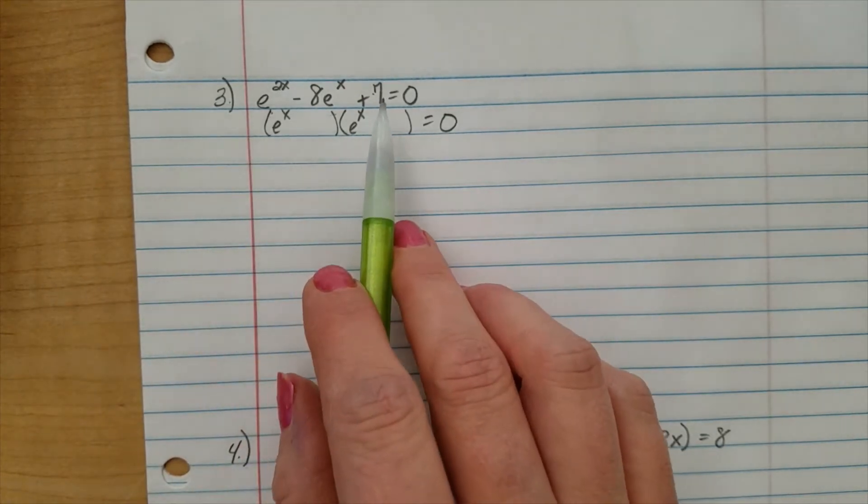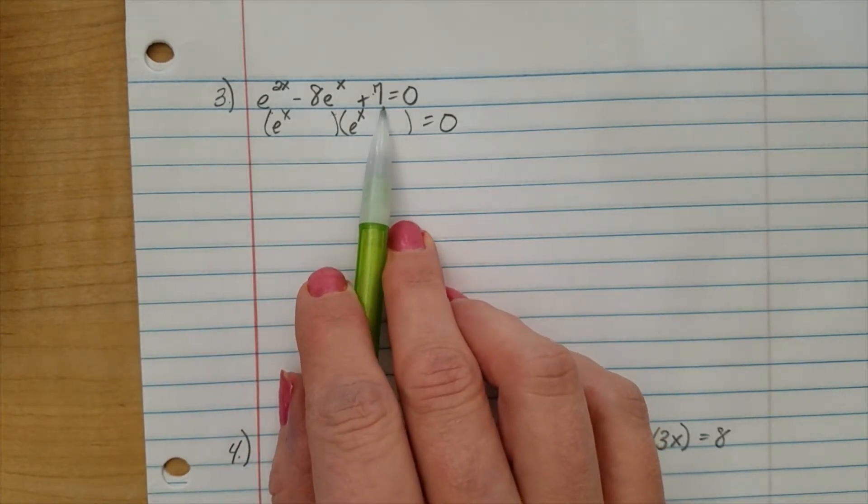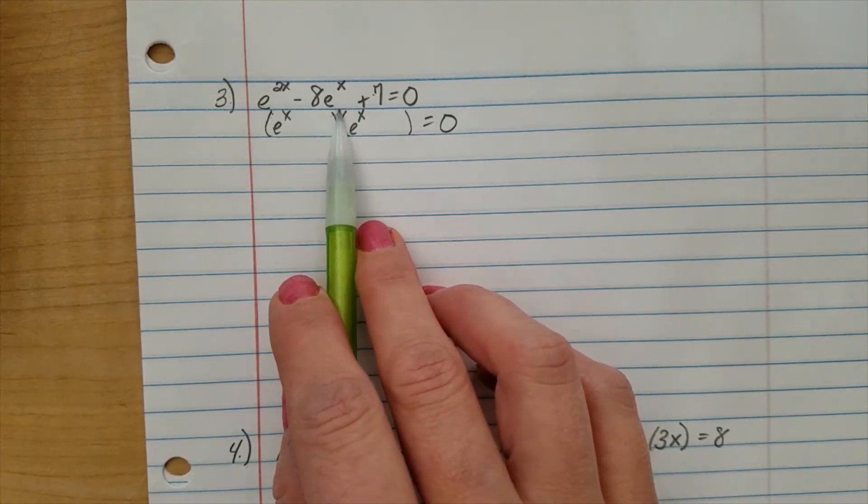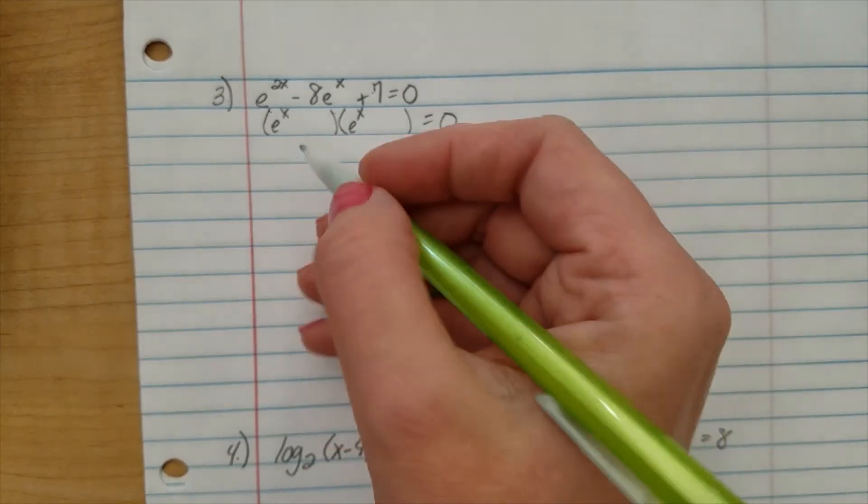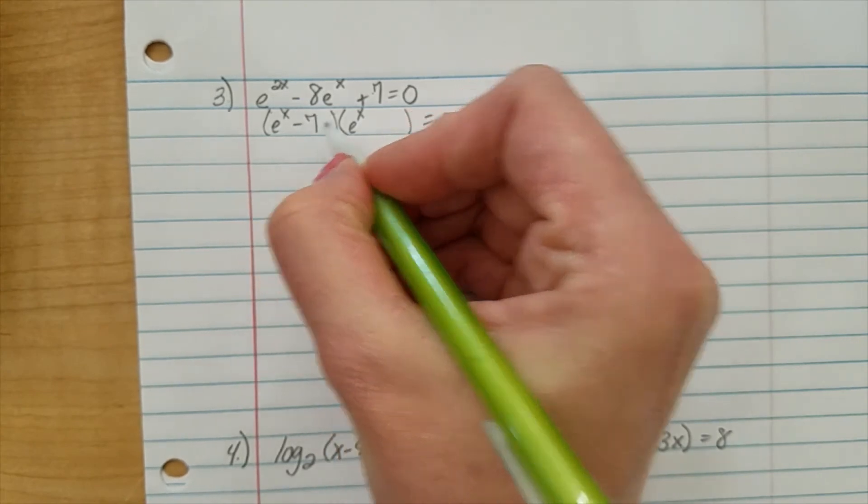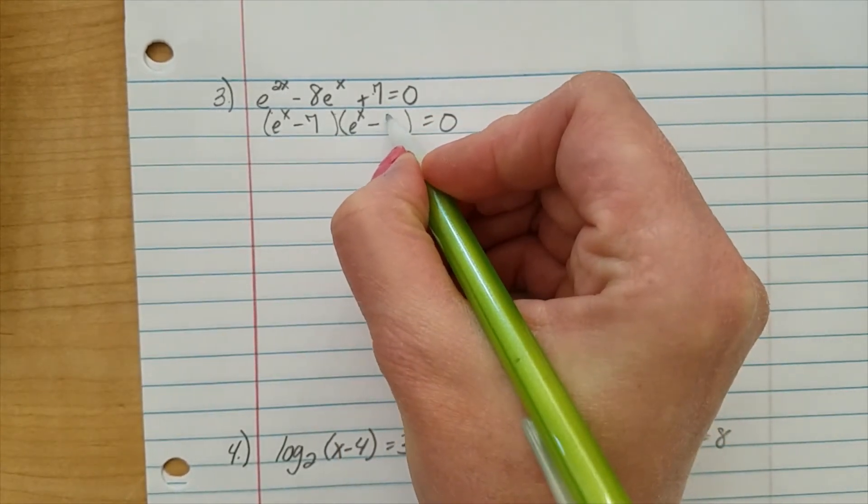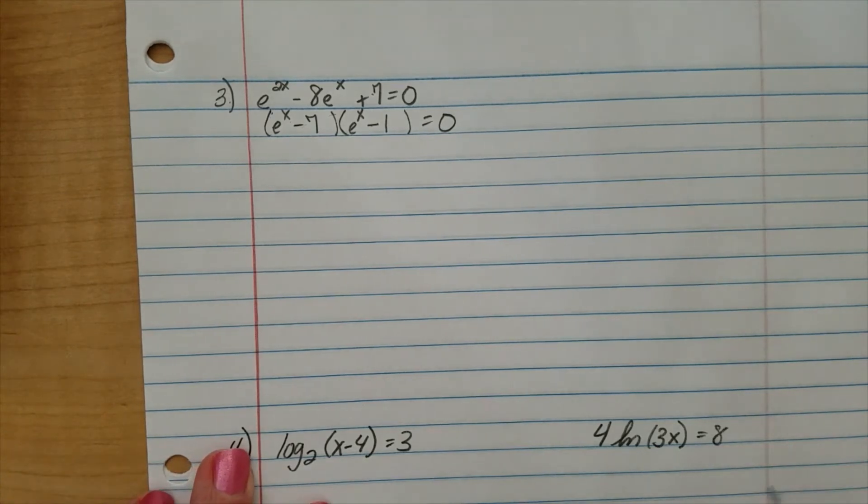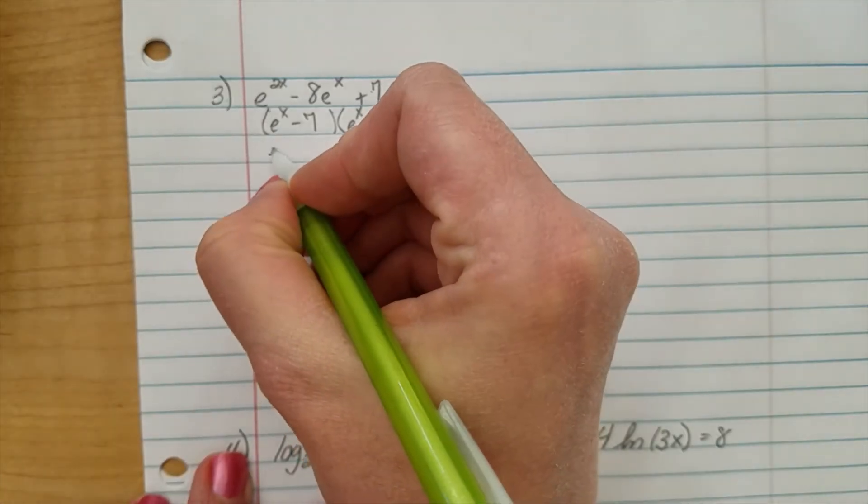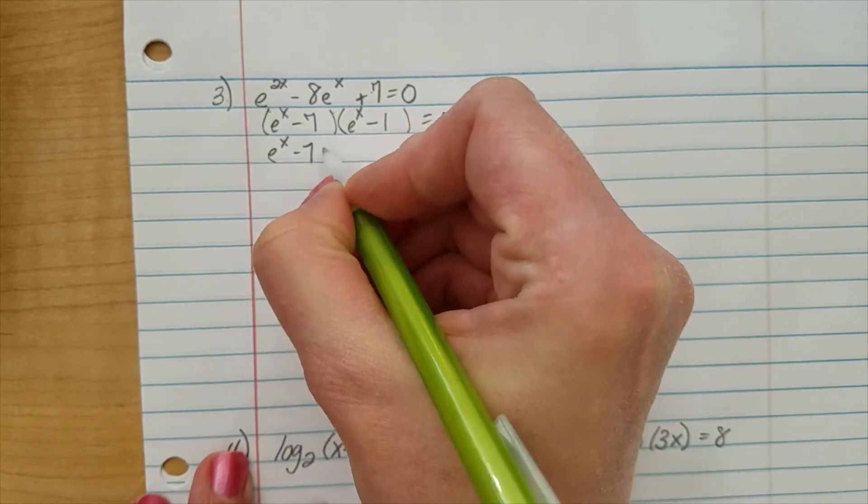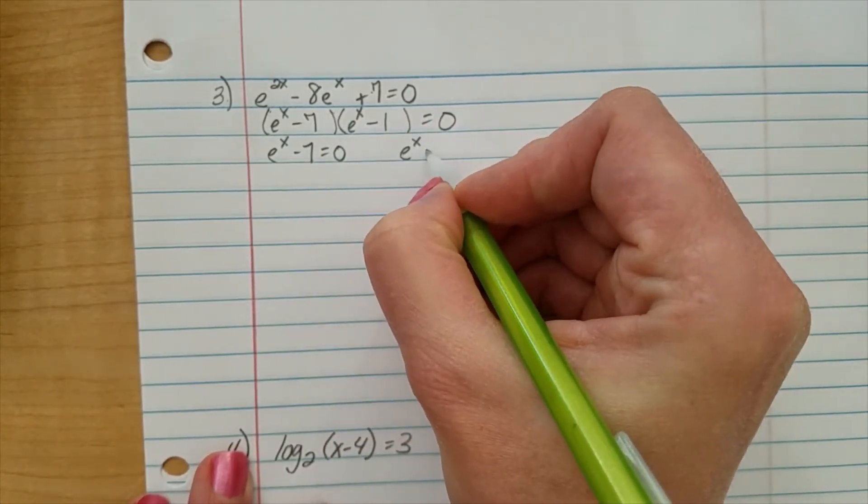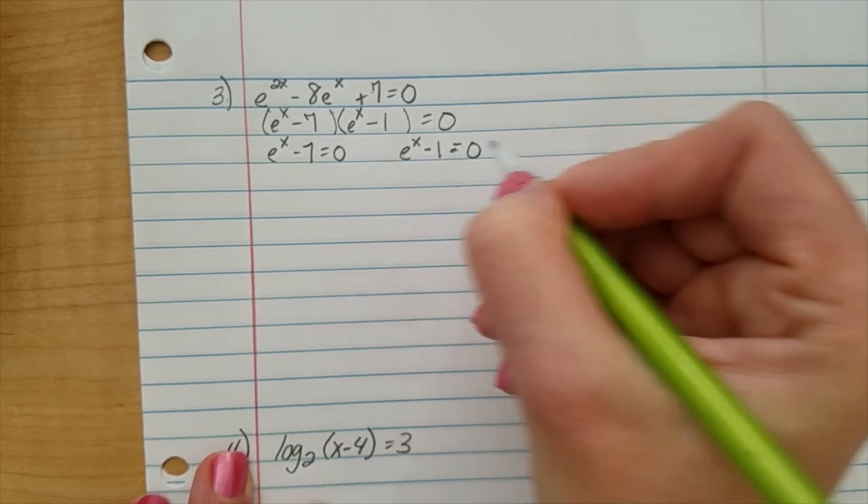Okay, so, two numbers that when you multiply them, you get positive 7, but you add them, and you get negative 8. Well, that would be negative 7 and a negative 1. We are factored. Let's use our zero product property to solve. e to the x minus 7 equals 0, and e to the x minus 1 equals 0.